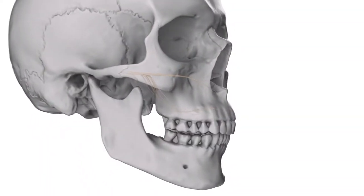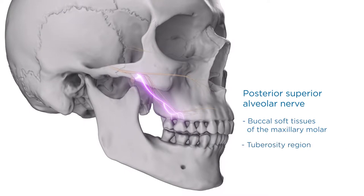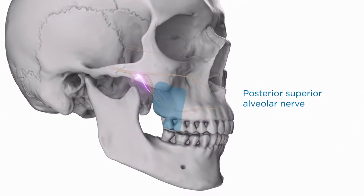The posterior superior alveolar nerve is the last branch to leave the maxillary trunk within the pterygopalatine fossa. Before it enters the maxilla, gingival branches are given off to innervate the buccal soft tissues of the maxillary molar and tuberosity region. The nerve then enters the maxilla and continues down the posterior wall of the maxillary sinus, ultimately contributing fibers to the superior dental plexus. The PSA nerve innervates the maxillary molar teeth with the possible exception of the mesial buccal root of the first molar, the surrounding periodontium and adjacent buccal mucosa, and the mucous membrane of the maxillary sinus.